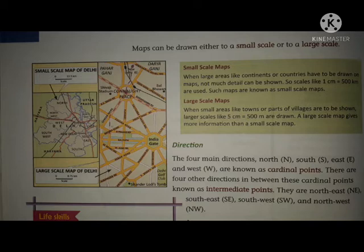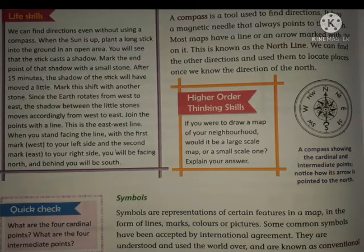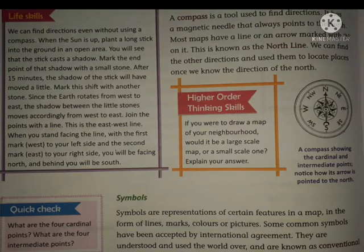There are 4 main directions: North, South, East, and West — N, S, E, and W — which are used to define direction on a map. These are known as cardinal points. There are 4 other directions in between these cardinal points — Northeast, Southeast, Southwest, and Northwest — known as intermediate points. A compass is a tool used to find directions; it has a magnetic needle that always points towards the North. Maps can be marked with an arrow N to show the North line, and other directions can be found from it to locate places.